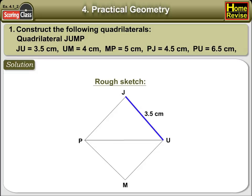JU is equal to 3.5 cm, UM is equal to 4 cm, MP is equal to 5 cm, PJ is equal to 4.5 cm, and PU is equal to 6.5 cm.